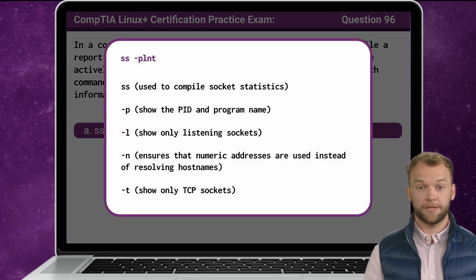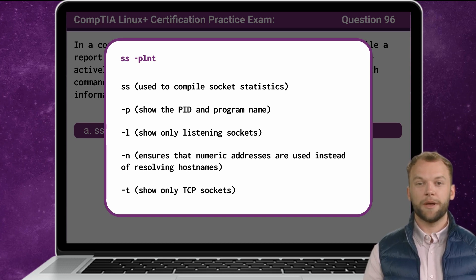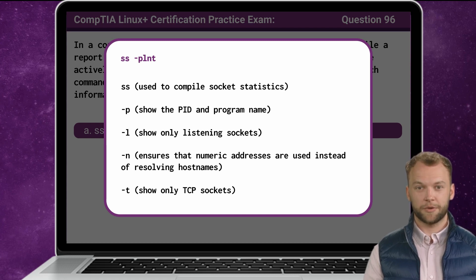Now that we know the answer, let's break it down. The ss command, short for socket statistics, is utilized to obtain socket-related data. The -p option adds details about the processes that own the sockets, displaying their process ID and program name. By specifying -l, the command filters the output to show only listening sockets. The -n option ensures that numeric addresses are used instead of resolving host names, aiding in faster retrieval of information. Lastly, the -t option limits the output to TCP sockets specifically.